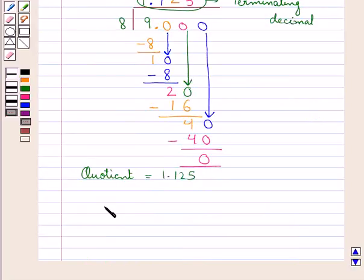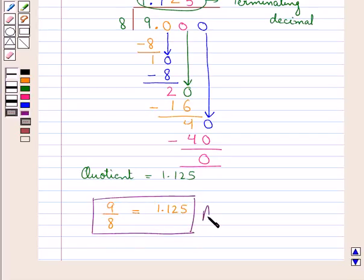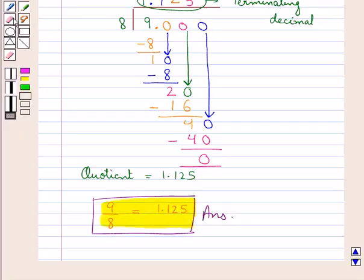So thus we have converted the given fraction 9 upon 8 to the decimal as 1.125. So this is our final answer. This completes the session. Hope you have understood the solution of this question.